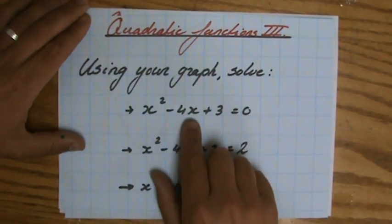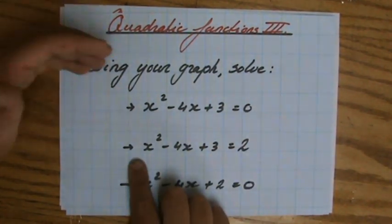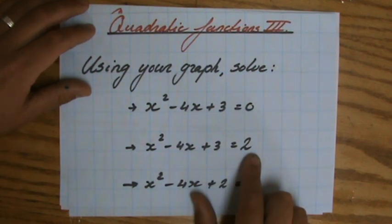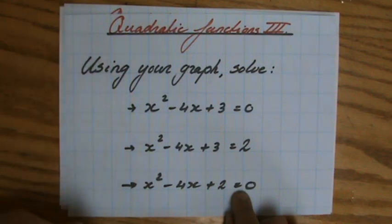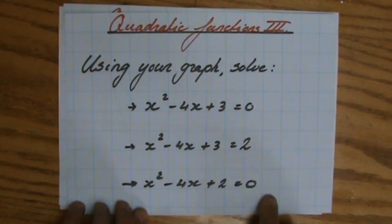and this is your graph, solve x squared minus 4x plus 3 equals 0. The second question is, using your graph, solve x squared minus 4x plus 3 equals 2. And the last one, the most difficult one, but we can only do this one if we understand those two, is by using your graph, solve x squared minus 4x plus 2 equals 0.